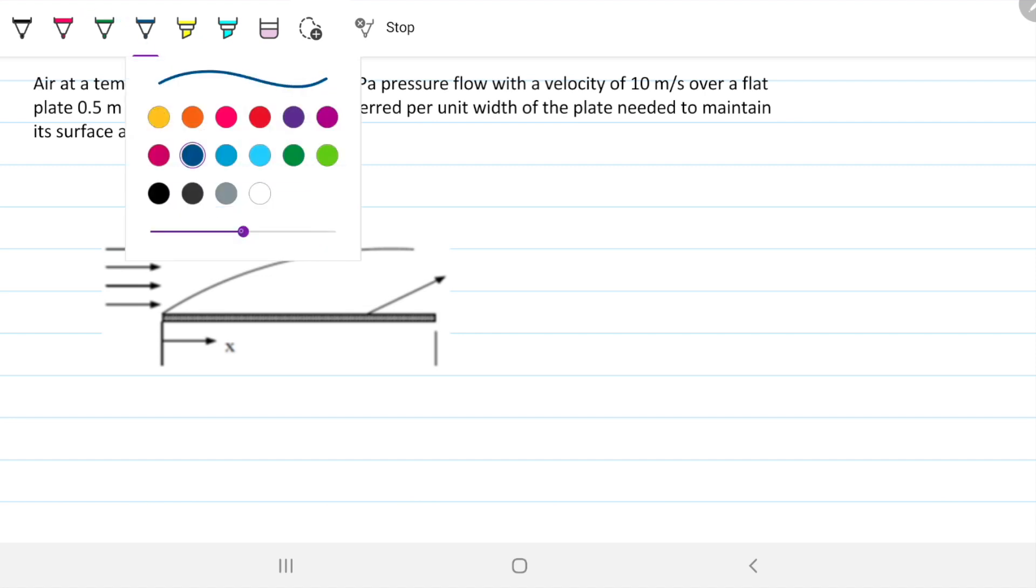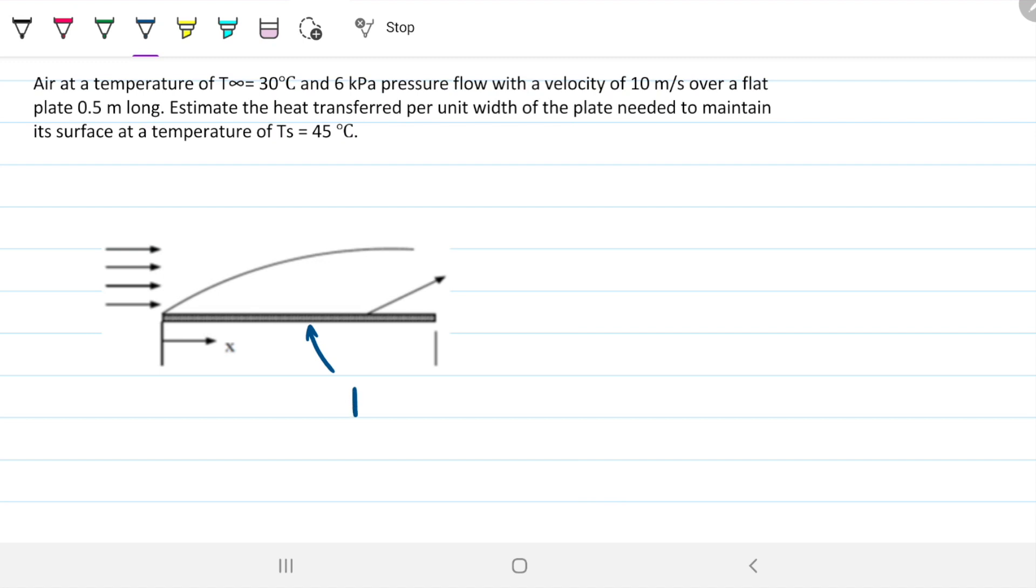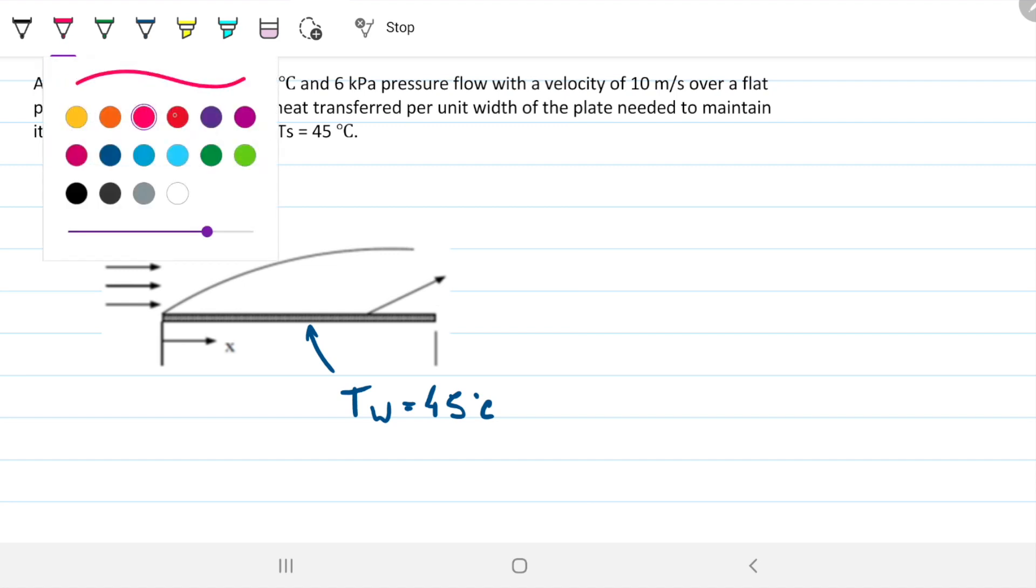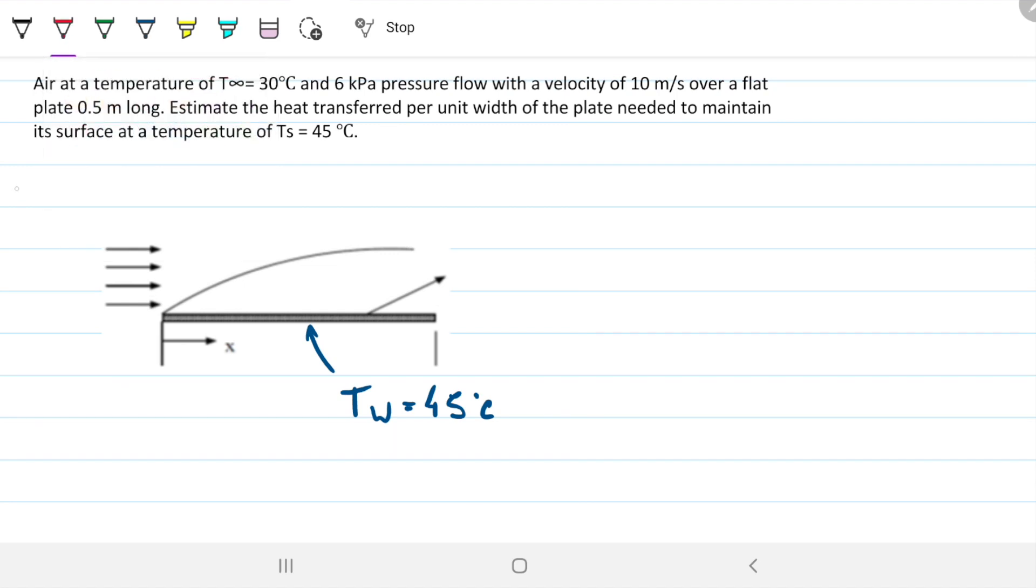So this right here is a wall temperature of 45°C, and then we have air coming in cold at 30°C with a velocity of 10 meters per second. So we know that there will be Q going from our plate into the air. We don't know the width of this plate, so we're going to assume one so that we can find the Q per unit width.